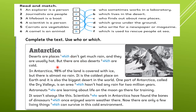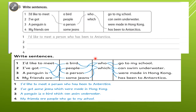Here are the answers for exercise two as well. Places — 'which'. Deserts, Sahara — 'which'. Area — 'which'. Astronauts — 'who'. Scientists — 'who'. Living things, animals, insects — 'which'. A mouse — 'which'.